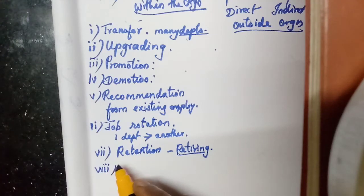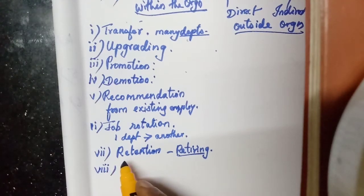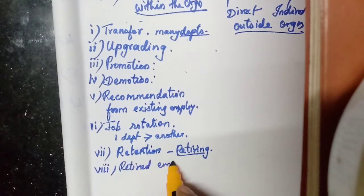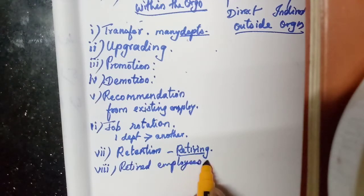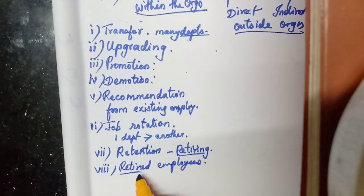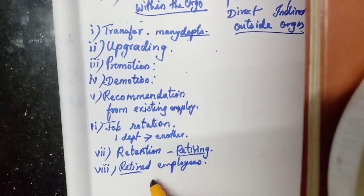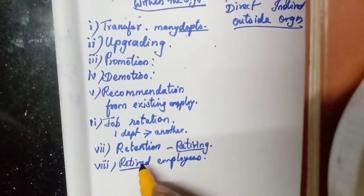Retired employees: already many employees will have retired. They will be at home, maybe at 65 or 70 years of age. They will be called back sometimes as they are experienced employees.